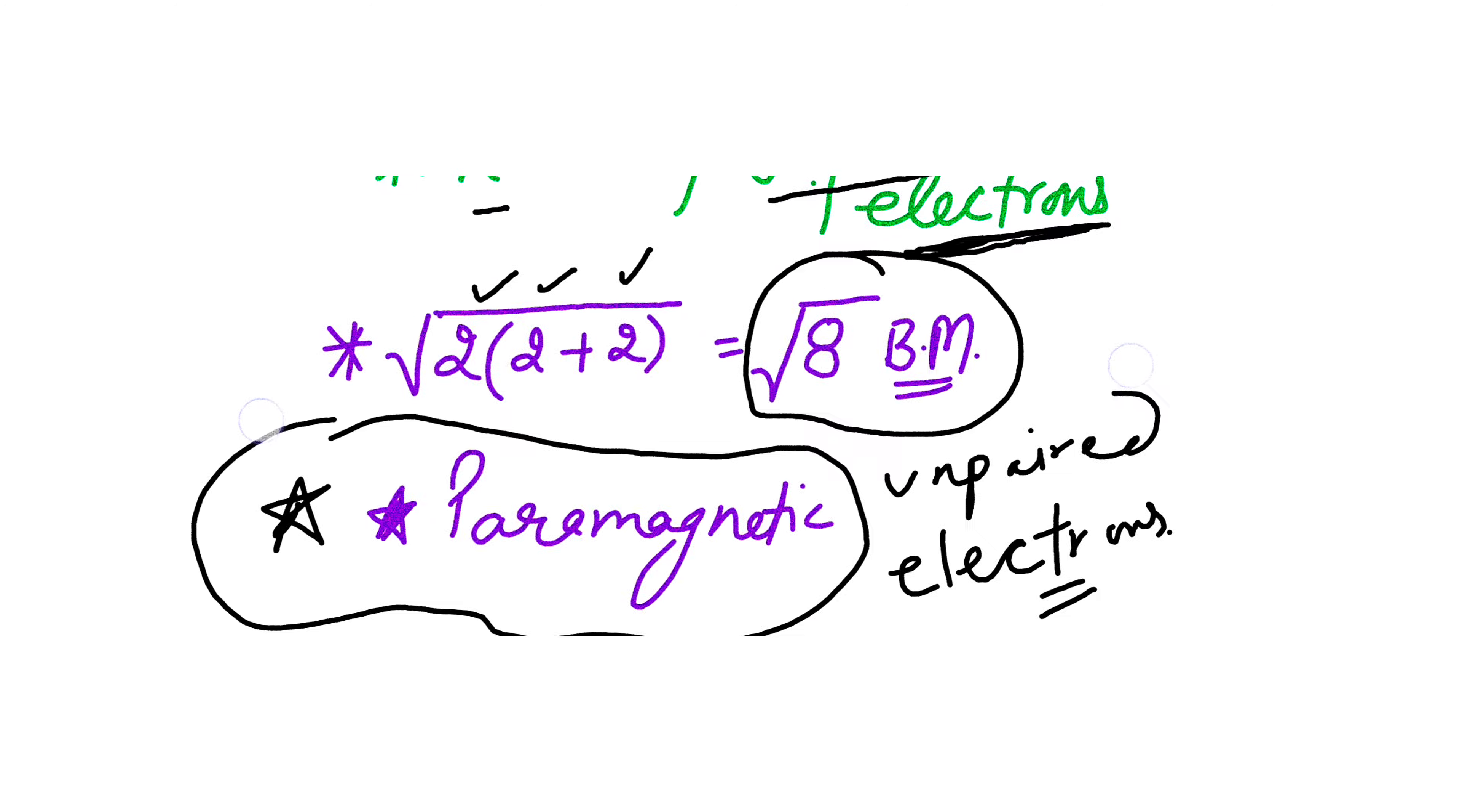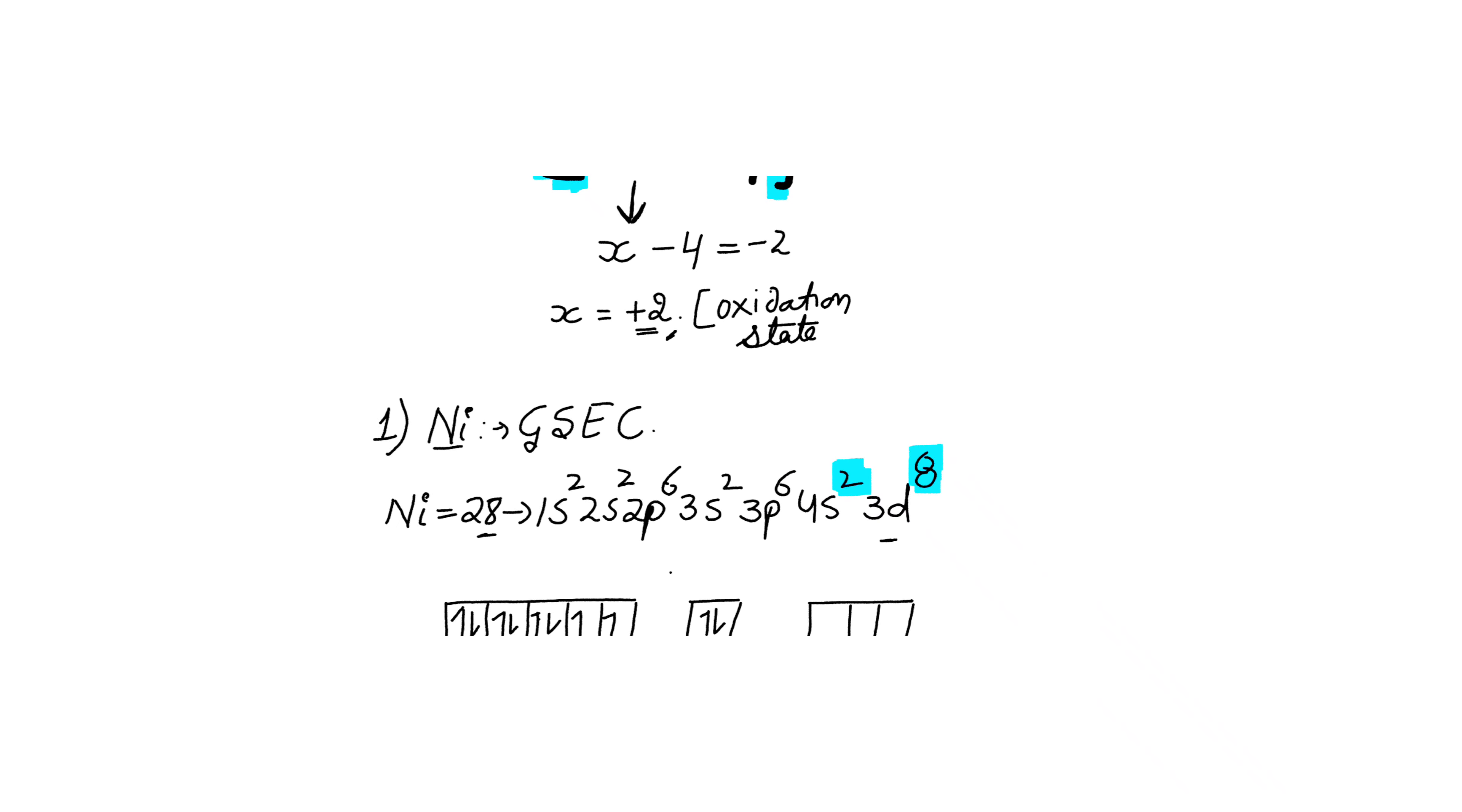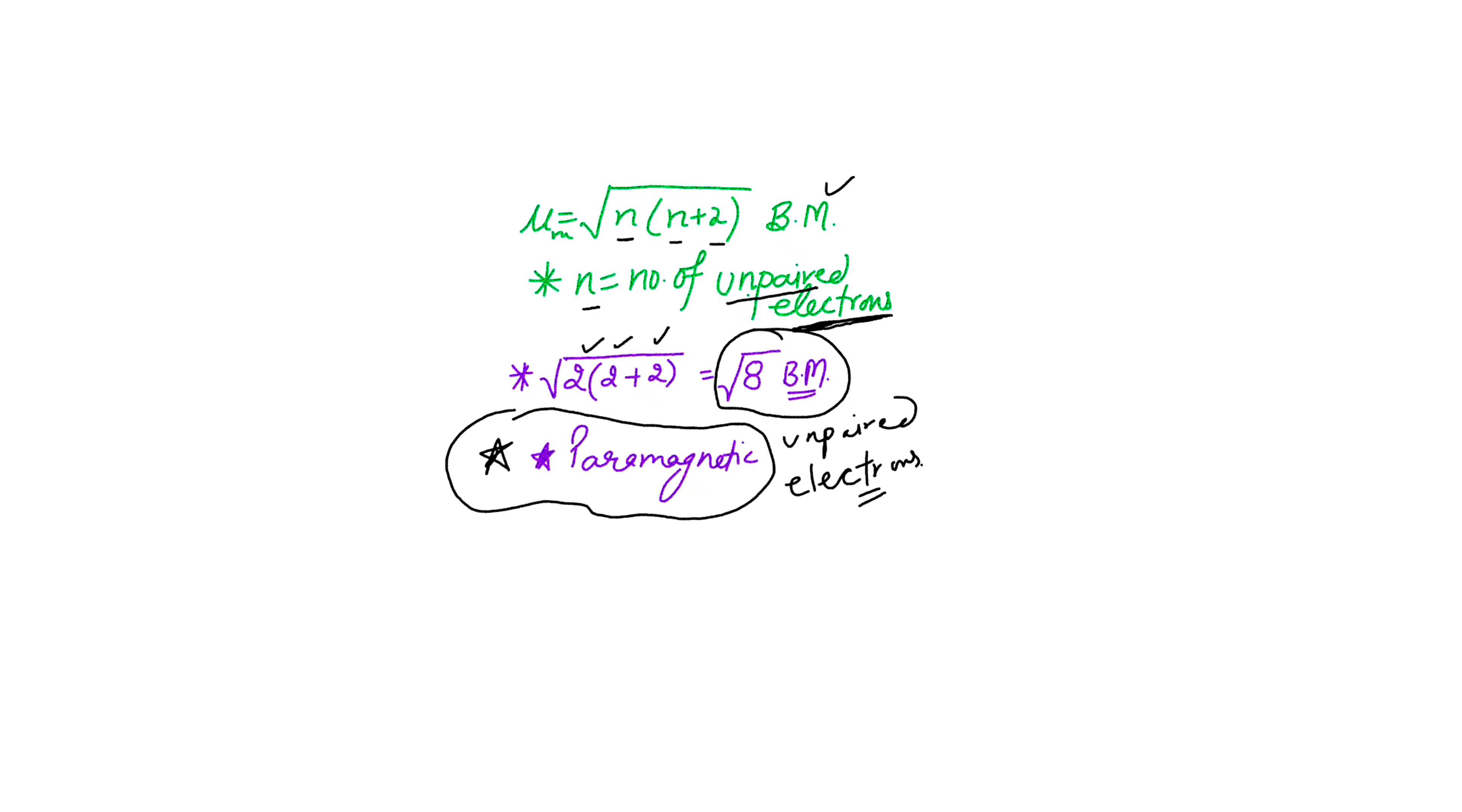Let's check if our given complex has unpaired electrons or not. As we have seen, there are two unpaired electrons, so this complex is paramagnetic. Hence we have figured out all the important concepts regarding this question. We found the hybridization, the net magnetic moment, and the paramagnetism for the complex.